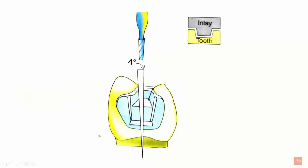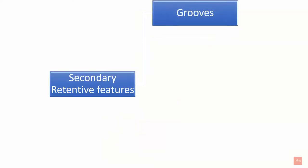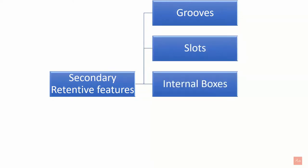Here in the picture you can see the walls of the cavity preparation are diverging occlusally with a taper of 4 degrees, and the internal line angles are well defined. The surface area of the cavity preparation is also greater, which enhances the retention of the restoration.